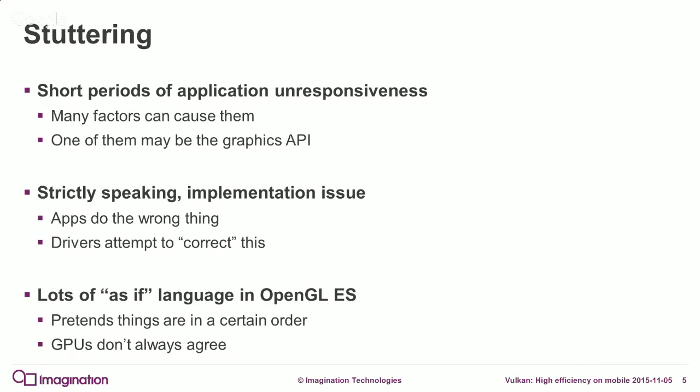OpenGL ES works pretending that everything happens in a particular order. Originally OpenGL was written as a software renderer — there was the idea of a server and client from the start, but it was all supposed to be that you had one thread doing the submission and one doing the rendering, in the exact order you specified everything.